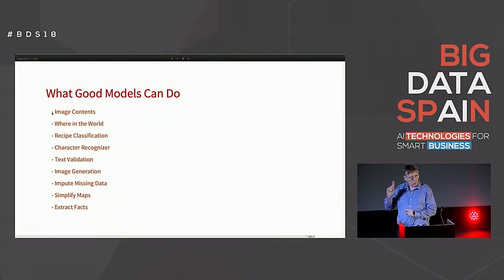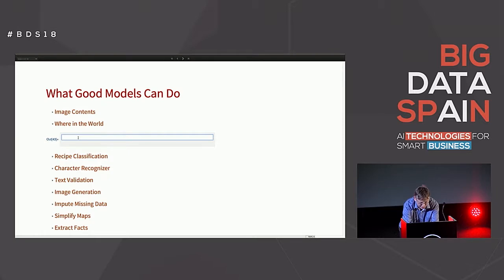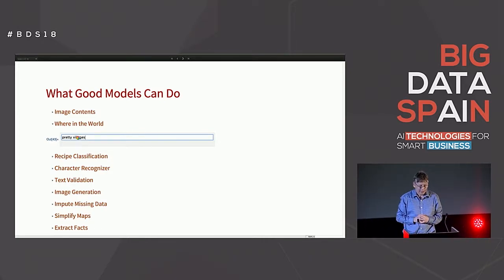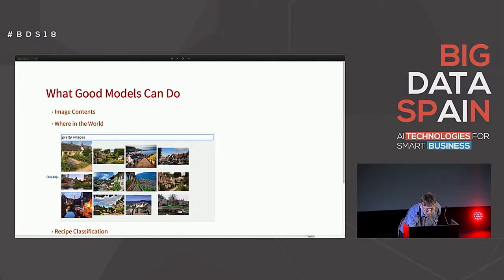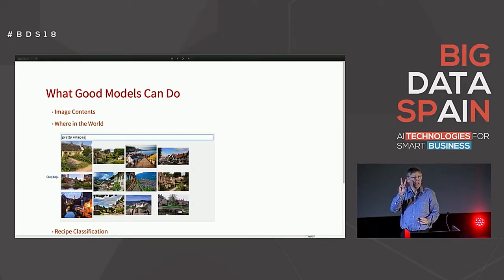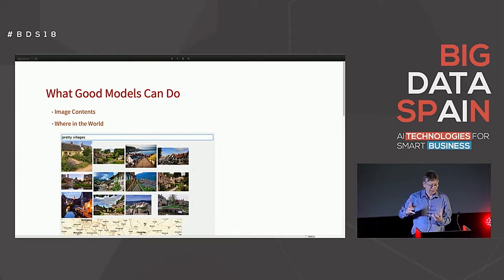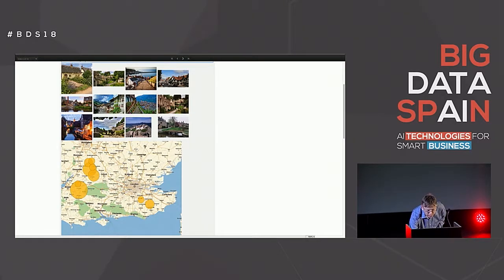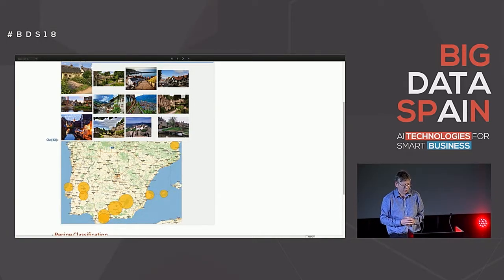That's large dimension in, one dimension out — because we're just getting a class out. Here's large dimension in with the same kind of thing — images in. I'm going to do a quick Google image search for 'pretty villages,' get some pictures back, and pick one that looks like where I come from. I click on that picture and tell it to give me two dimensions out this time: not just a class, but a latitude and longitude — which I can throw onto a map to show where it looks like that picture came from.